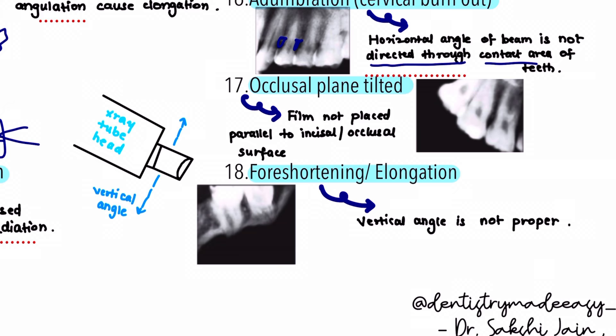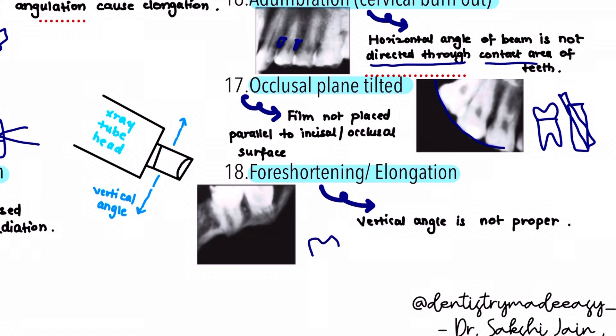The next error is the occlusal plane getting tilted. This occurs if the film is not placed parallel to the incisal or occlusal surface. If the film is tilted too much, the occlusal plane appears tilted with a curved appearance on the x-ray. The correction is that the film edge should be placed parallel and properly aligned when taking x-rays.